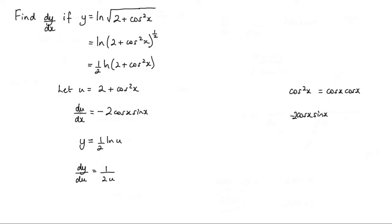So now we've found du/dx and dy/du, we can find dy/dx. Let me just split this page up. dy/dx is equal to dy/du multiplied by du/dx. That's the chain rule. dy/du is 1 over 2u, and we multiply that by du/dx which is negative 2 cos x sin x.